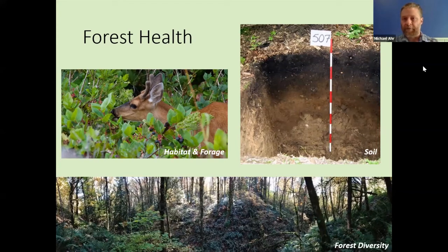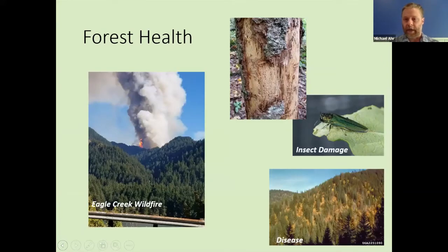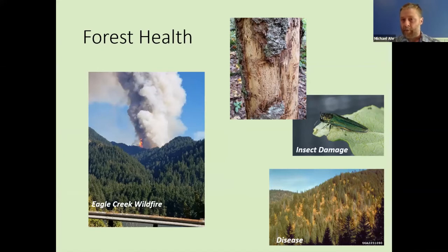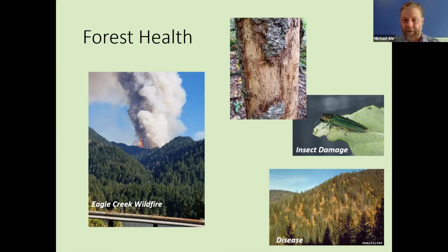When we think about forest health in the Pacific Northwest, we think about three really big things: wildfire — there's a lot we can do to make forests more resilient if wildfire comes our way — insect damage such as Douglas fir beetles or the emerald ash borer that we're trying to be prepared for since it may show up in Oregon — and disease. You see some yellow trees on a hillside in this photo that might indicate disease in the forest.